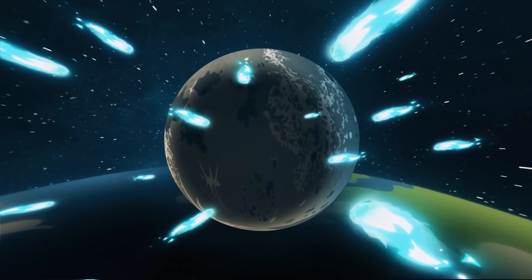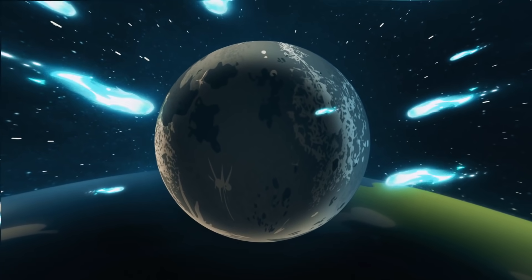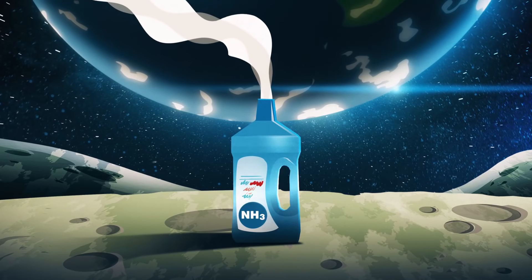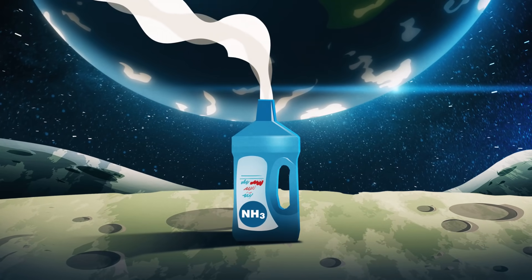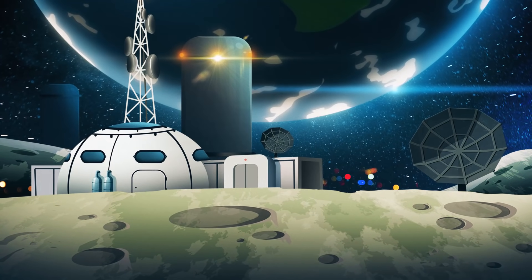Say we crash a hundred icy comets into the surface of the moon. Say we import an excess of ammonia into the atmosphere, and the moon's harsh ecosystem grows more livable. Soon, we would build the first lunar settlement.